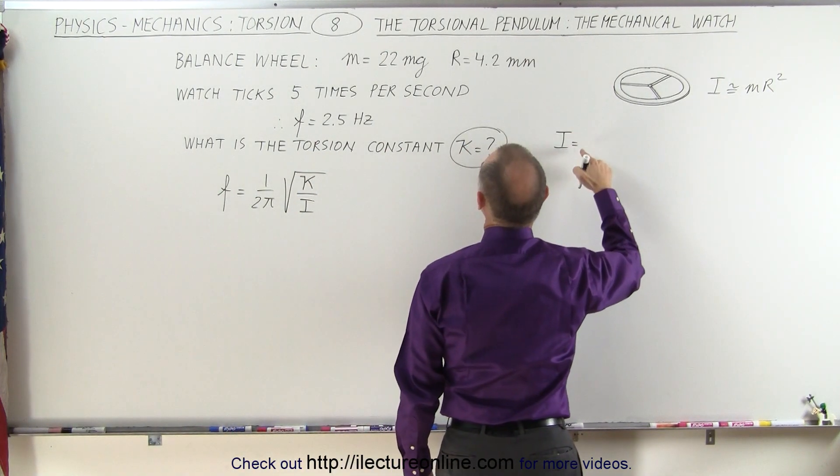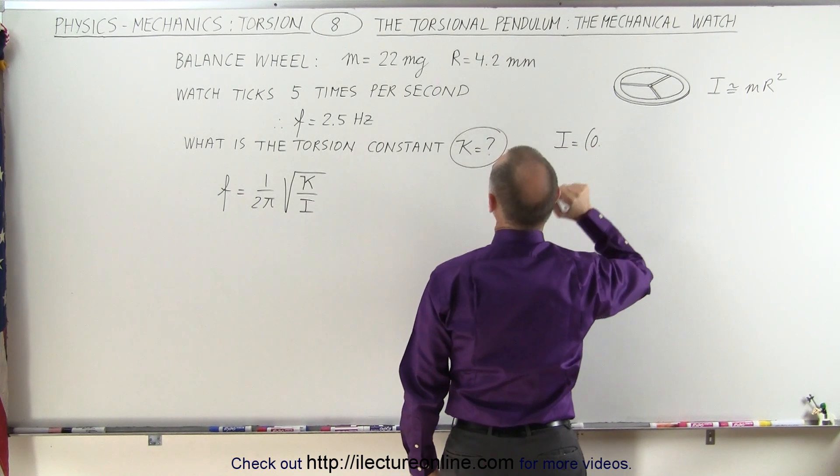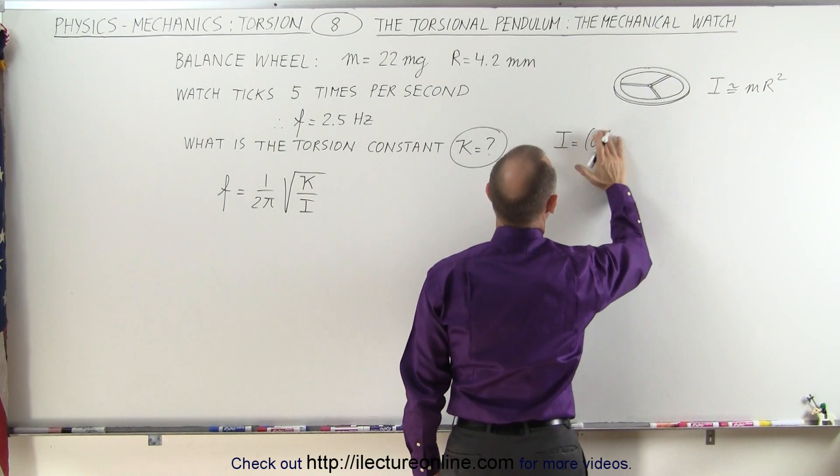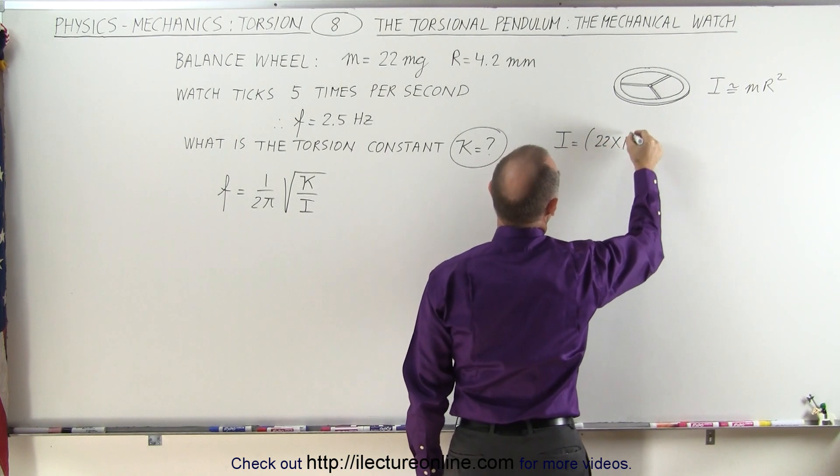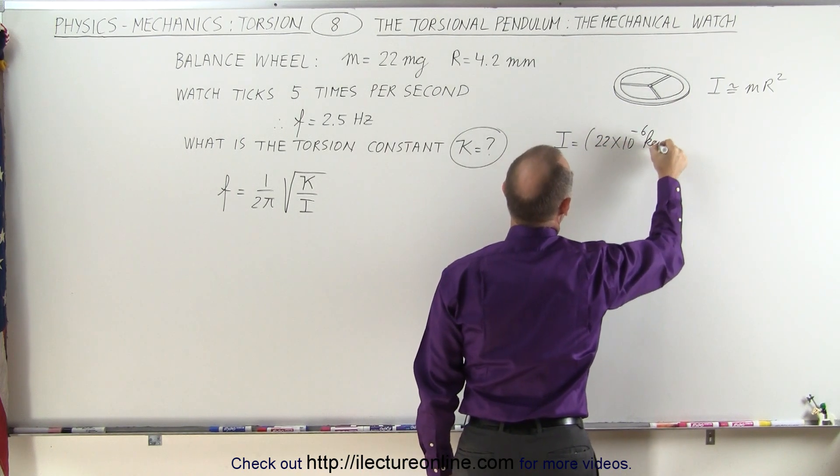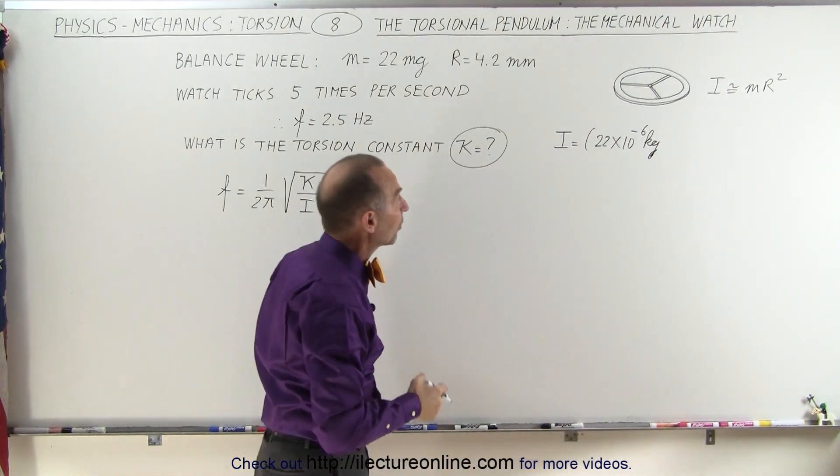I is equal to m, which is 22 milligrams—let's call that 22 times 10 to the minus 6 kilograms, because there's a thousand grams in a kilogram and a thousand milligrams in a gram.